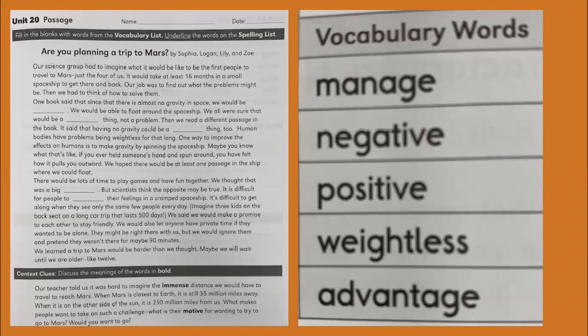Our job was to find out what the problems might be. Then we had to think of how to solve them. One book said that since there is almost no gravity in space, we should be blank. We would be able to float around the spaceship. We were all sure that would be a blank thing, not a problem. Then we read a different passage in the book. It said that having no gravity could be a blank thing, too.